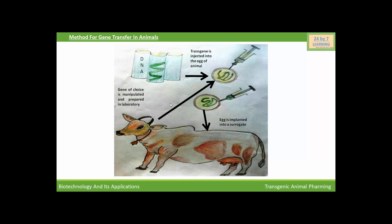This is the method for gene transfer using DNA microinjection. But its main drawback is its low success rate — only 1–4% of microinjected eggs result in the live birth of an animal containing the transgene, while 80–90% of transgenic embryos die during early development.